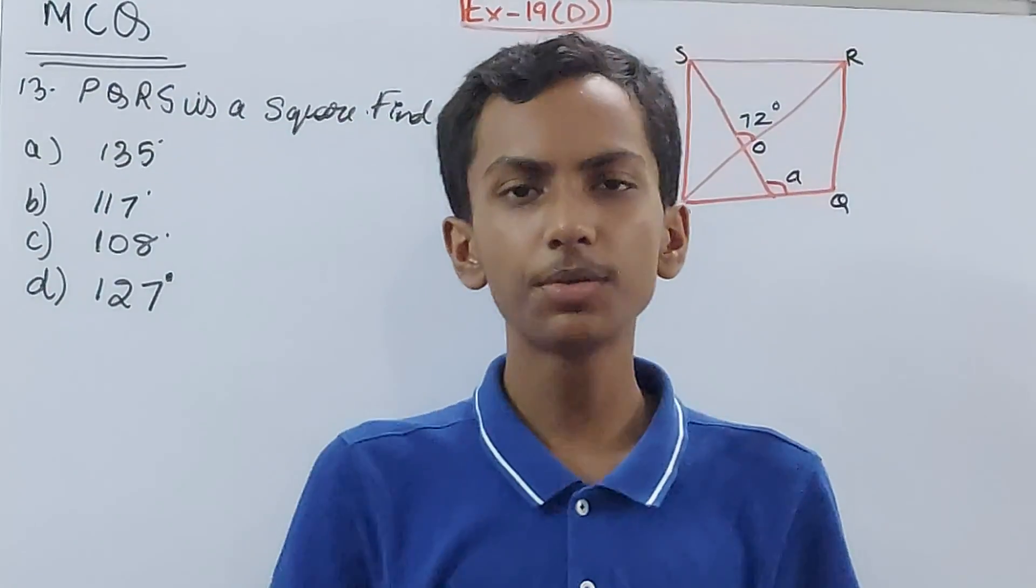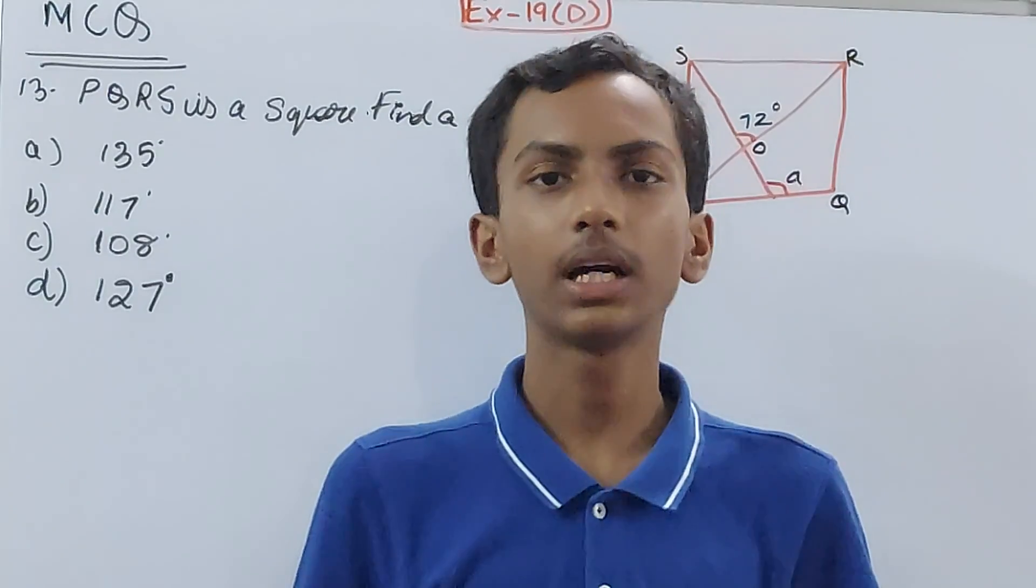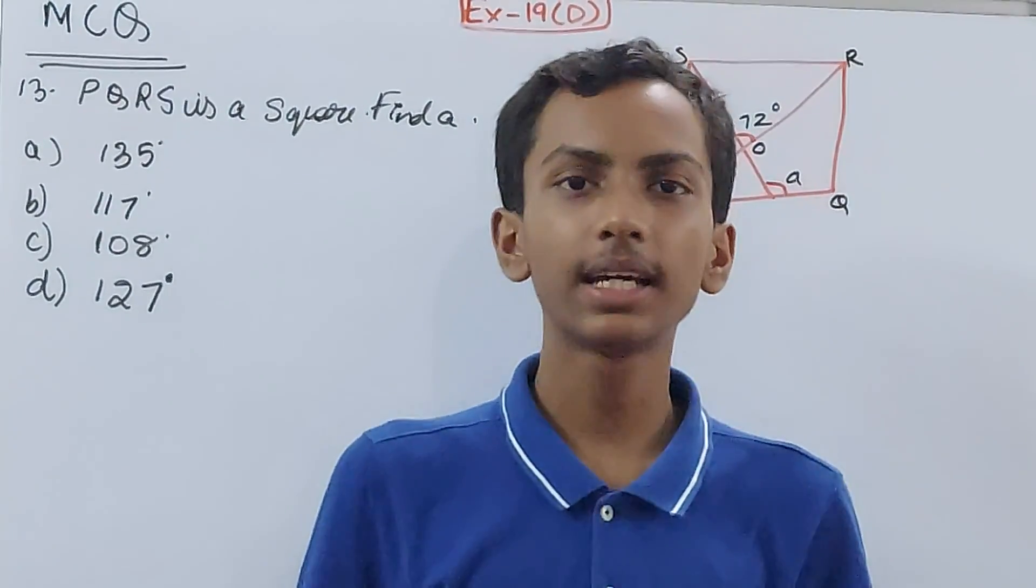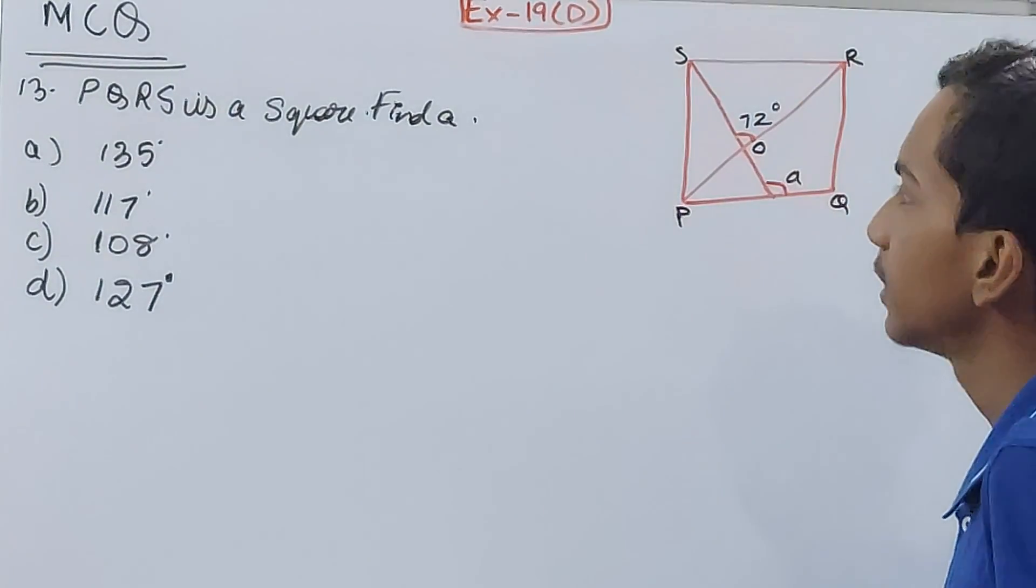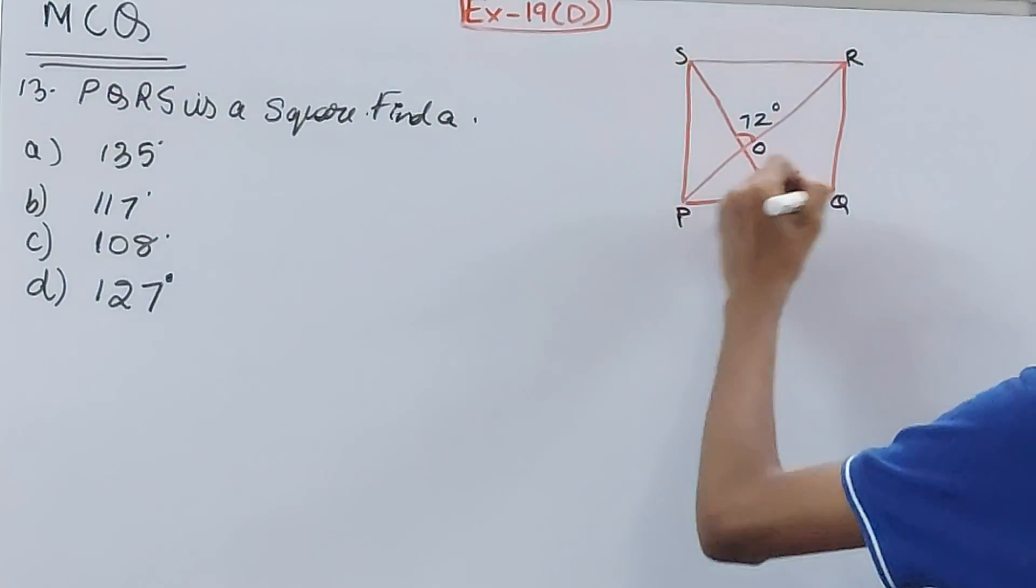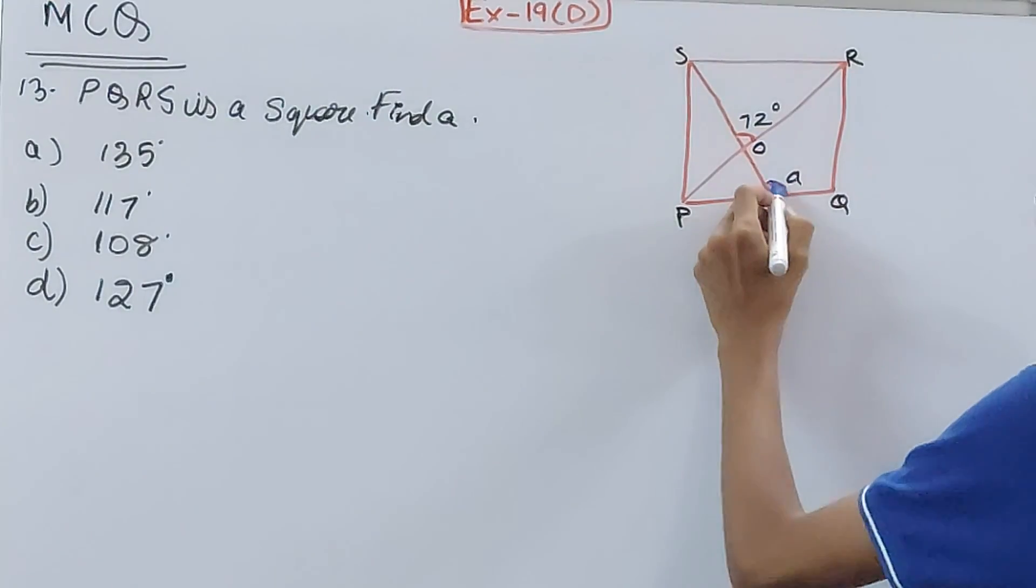Hello friends, welcome back to my YouTube channel Local Learning. In this video we're going to solve ICSE Mathematics Class 8, Chapter Number 19, Special Type of Quadrilaterals, Exercise 19D, Question Number 13. PQRS is a square. Find angle a. So it's an MCQ question. PQRS is a square, and you have to find out angle a.